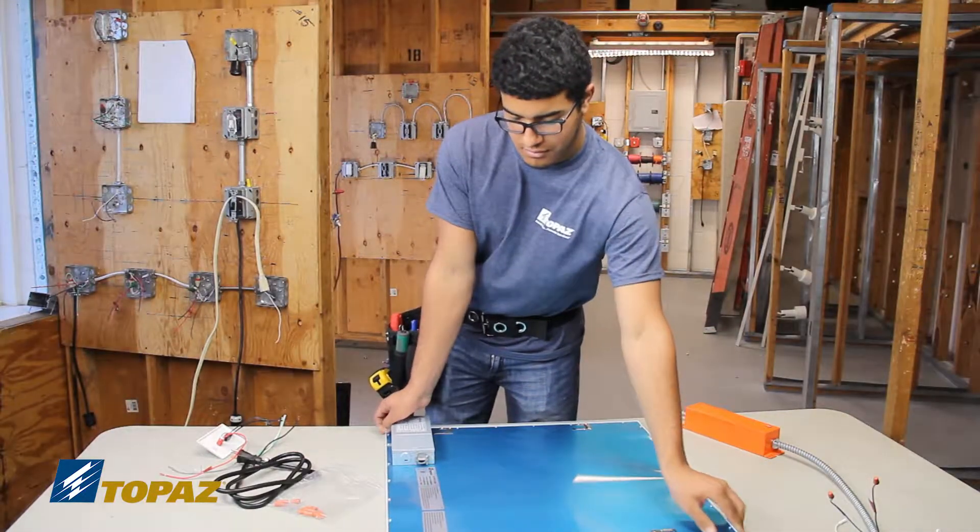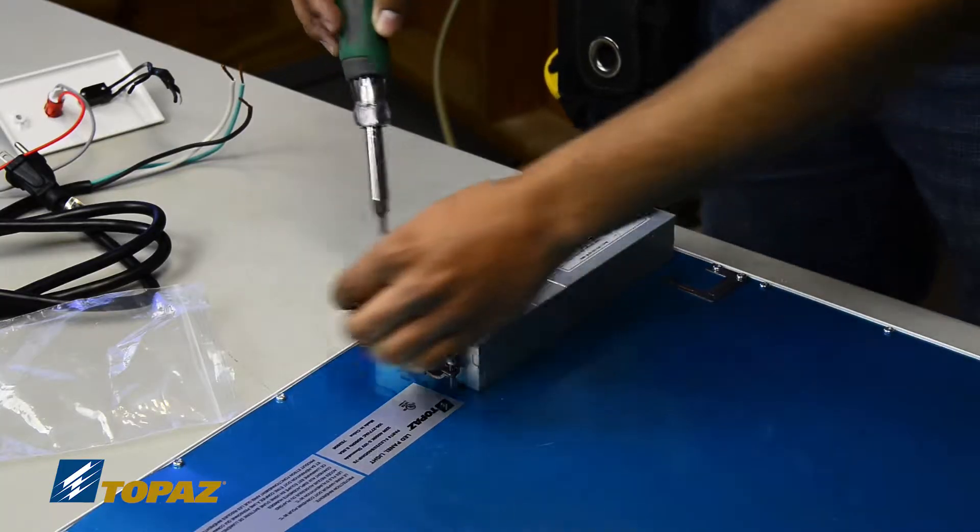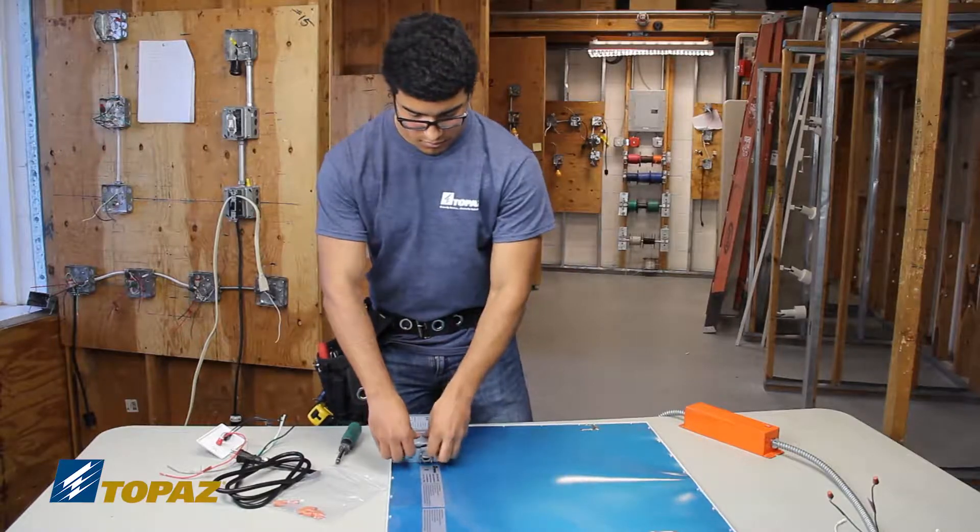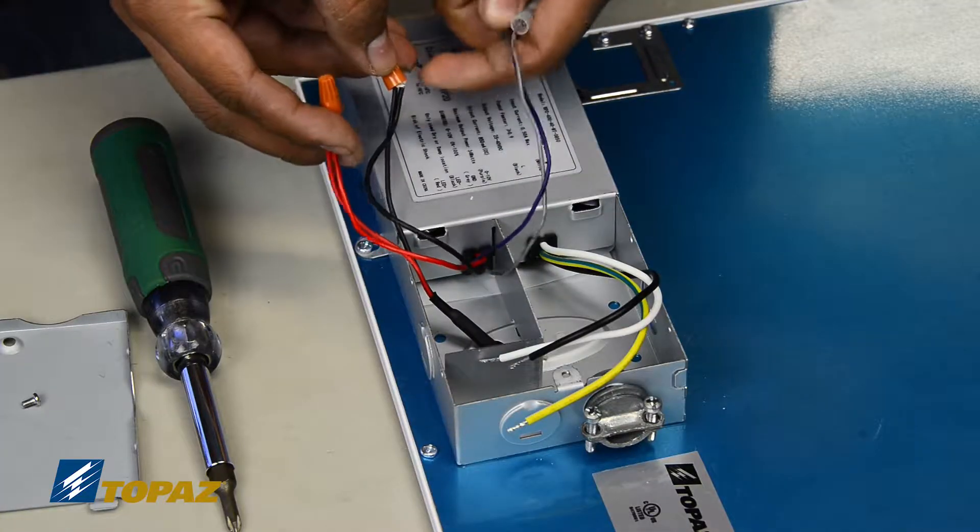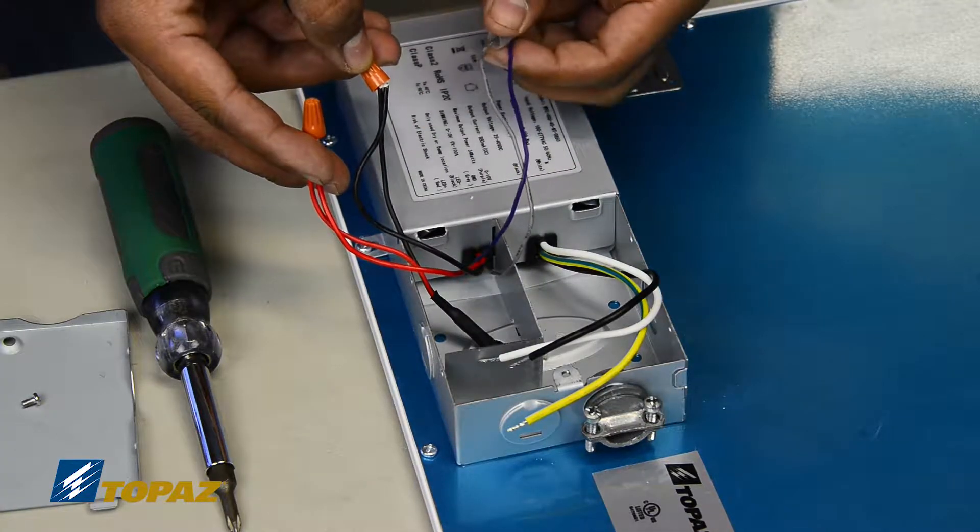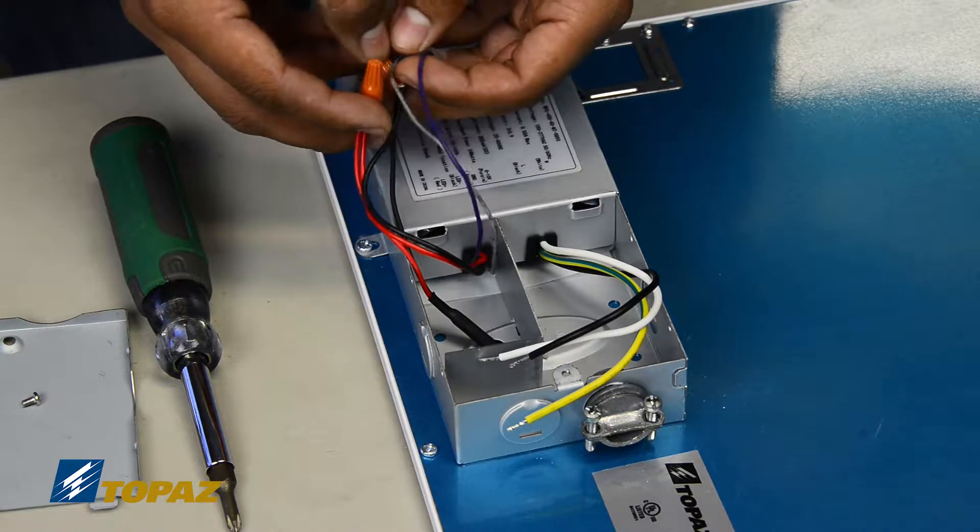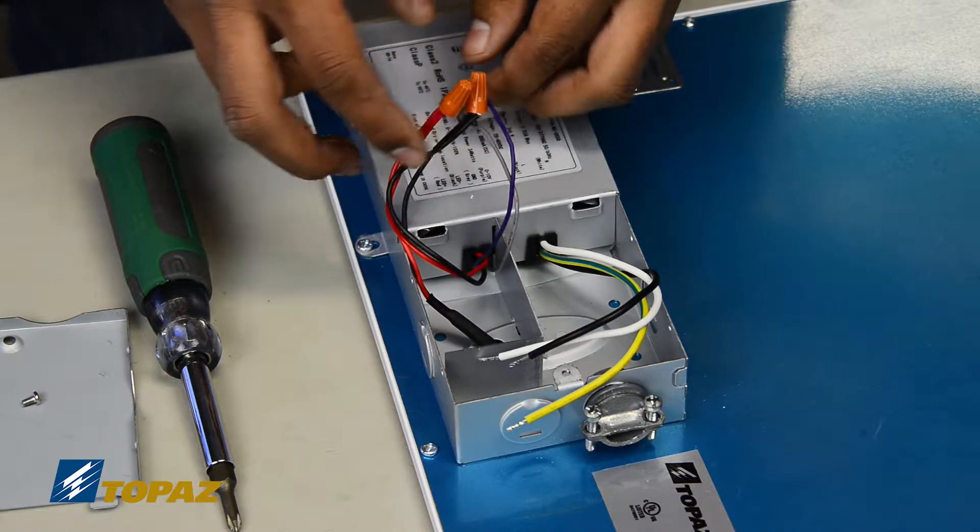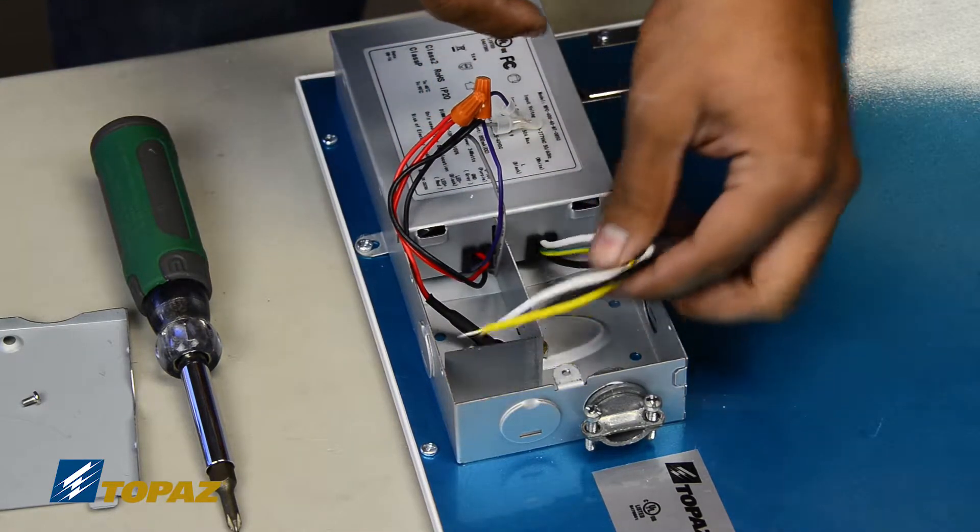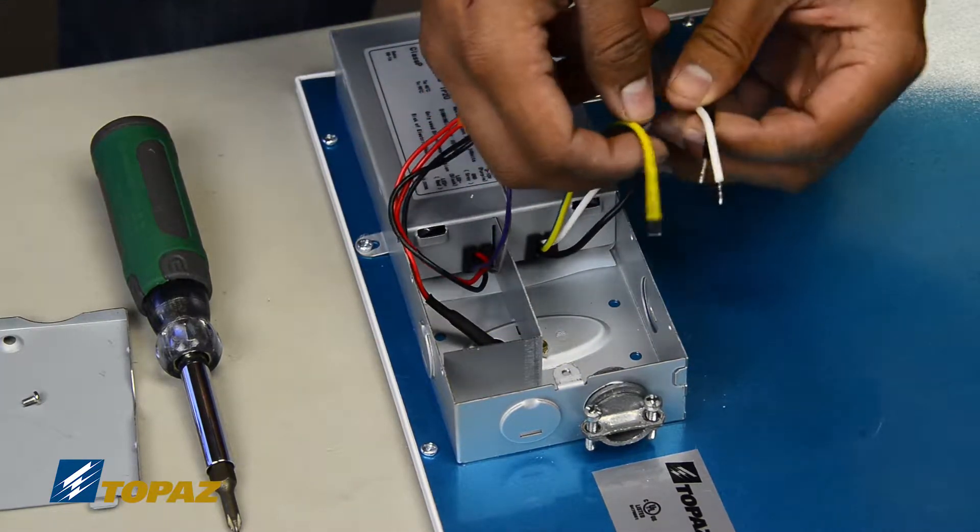We're working with the LED flat panel. First we'll open the junction box. On one side in the LED light fixture we have the leads that go to the LED driver and the leads that go to the LED fixture itself. On the second compartment we have the line voltage side where you're going to bring your power supply in.